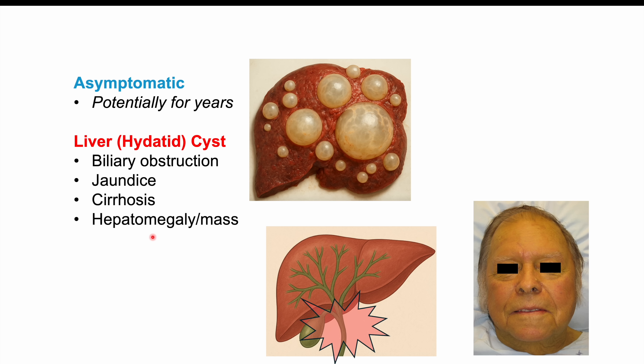We can often see hepatomegaly — an enlarged liver. As that cyst gets bigger, the liver itself starts to get larger and can ultimately feel like an abdominal mass, usually in the right upper quadrant, above the belly button on the patient's right side. Patients will often also have decreased appetite.